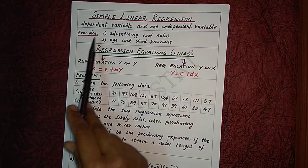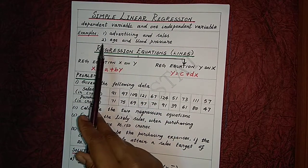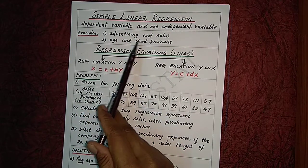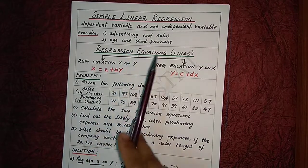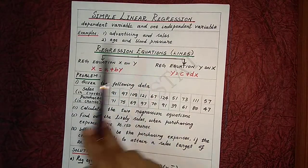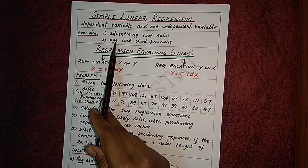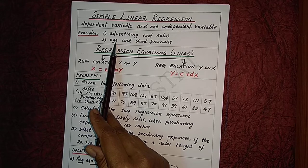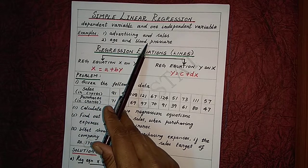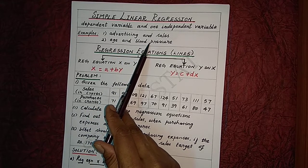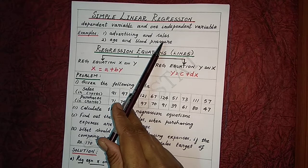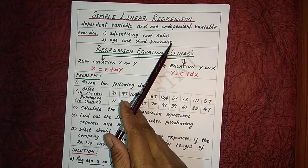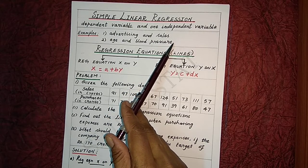Examples include advertising and sales, age and blood pressure, height and weight, etc. By denoting one variable as dependent and the other as independent, the cause and effect relationship between them can be studied using regression analysis.